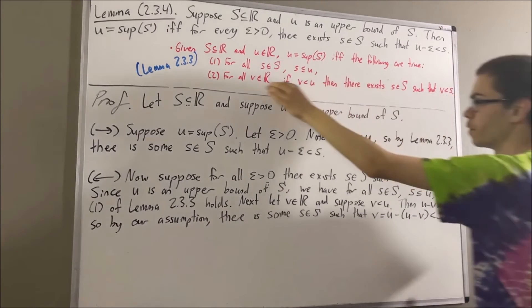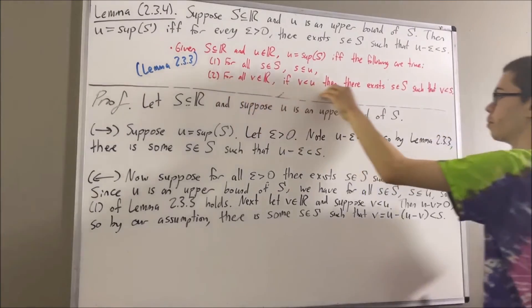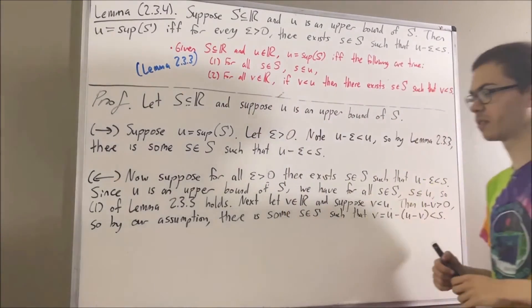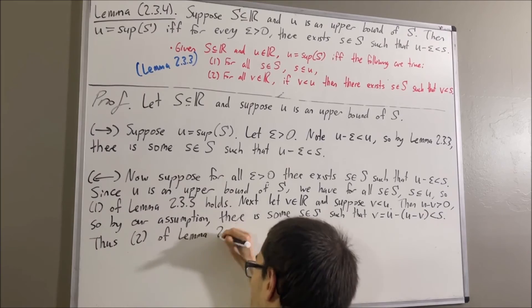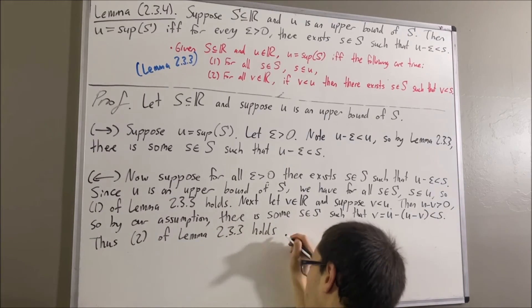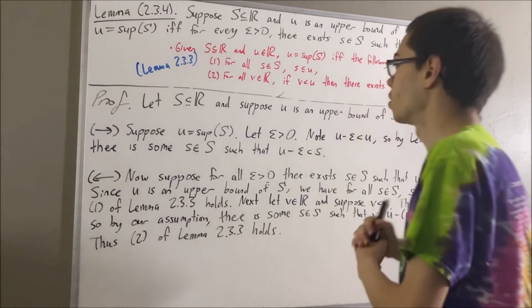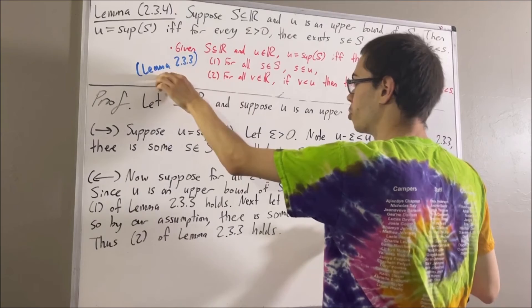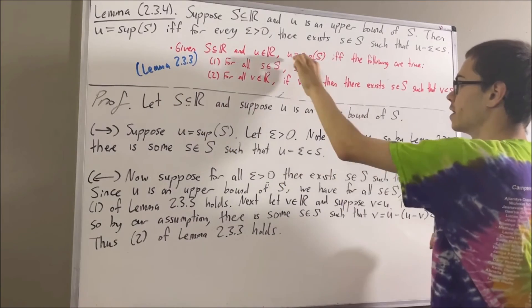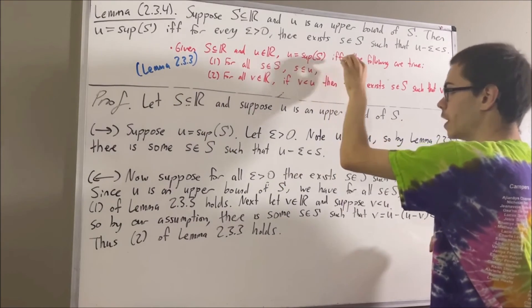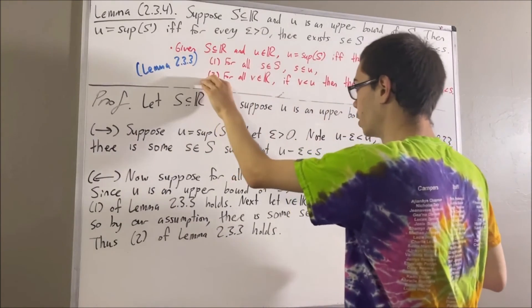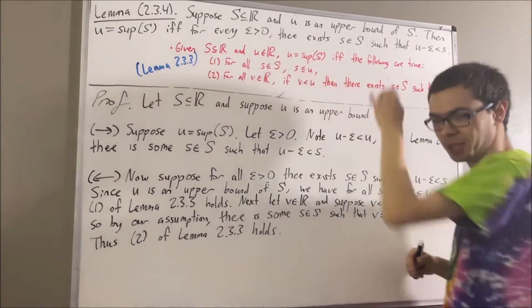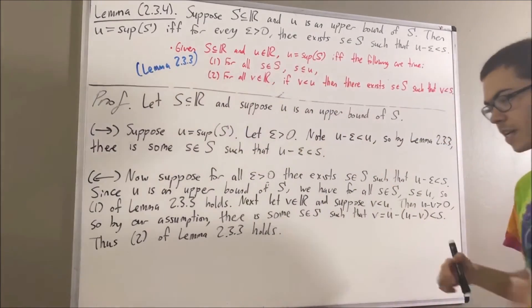Therefore, we have proven that part 2 of lemma 2.3.3 holds. So we have proven that both conditions 1 and 2 of lemma 2.3.3 hold. And since u is the supremum of S if and only if both 1 and 2 hold, it follows that u is the supremum of S.